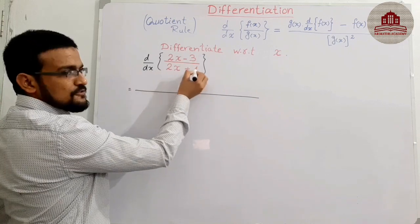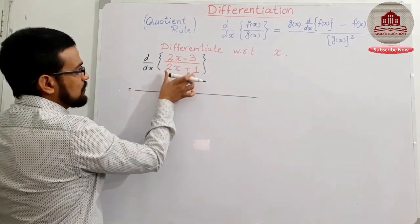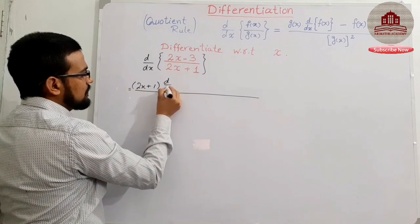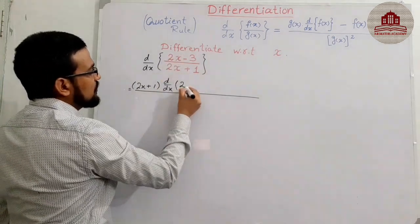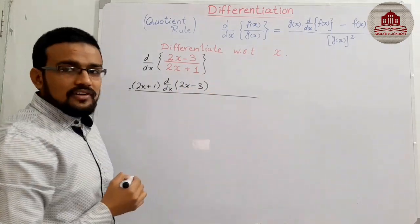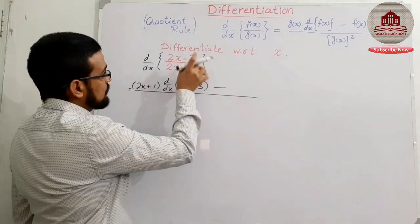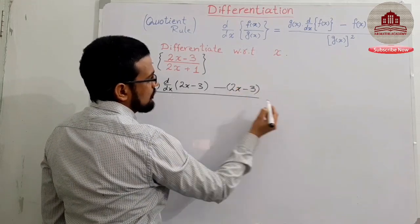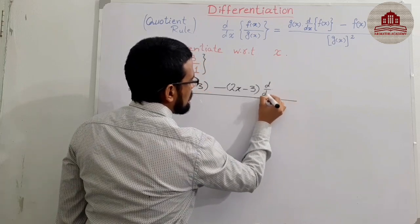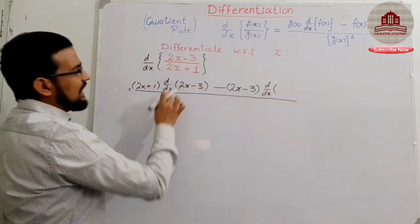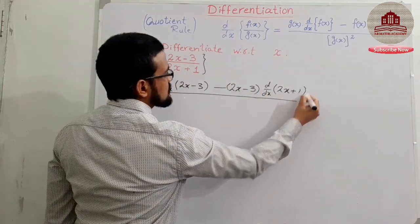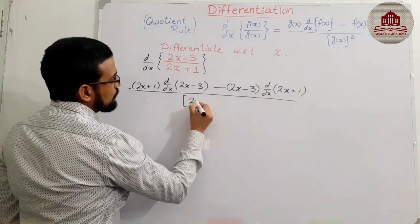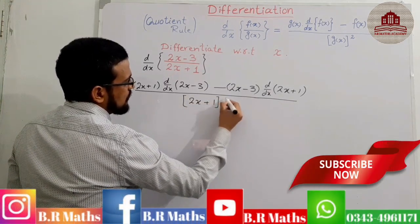Denominator 2x + 1 as it is, and the derivative of the numerator which is 2x − 3. Then minus: the numerator 2x − 3 remains the same, and the derivative of the denominator which is 2x + 1. The whole expression is divided by the square of the denominator, which is (2x + 1) whole square.